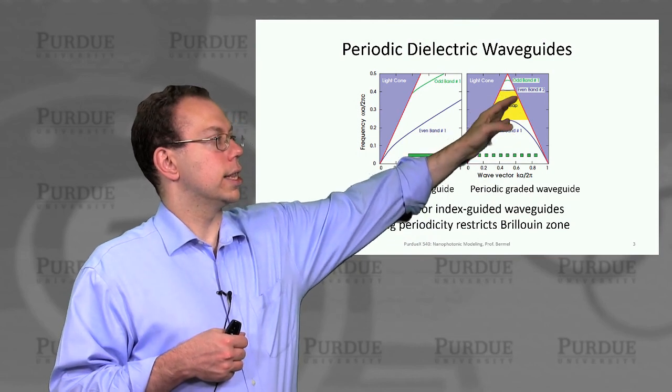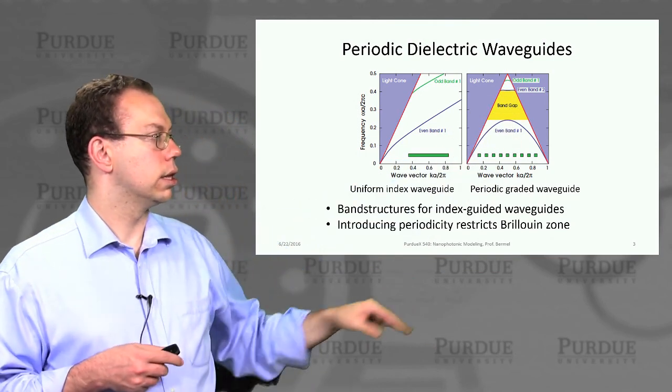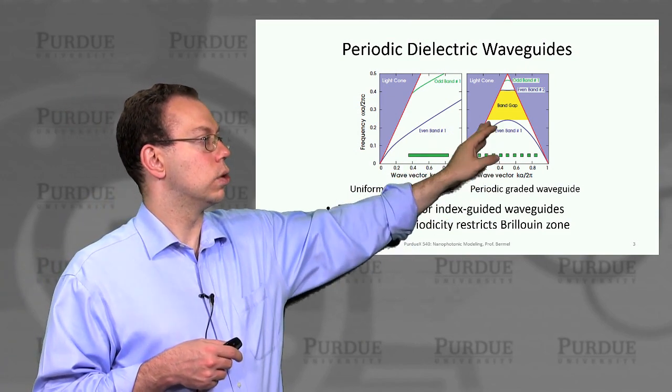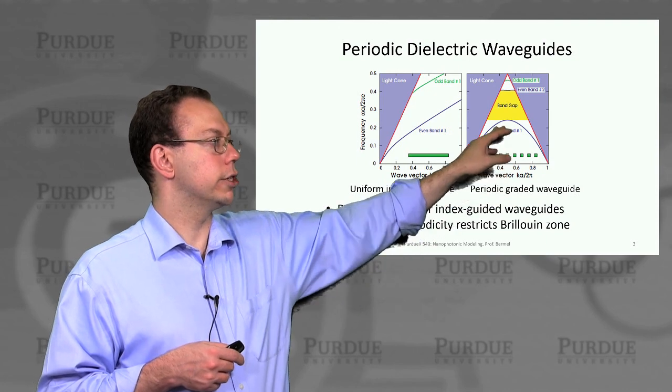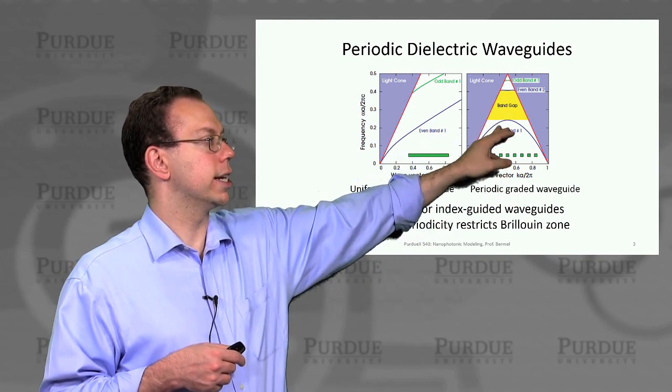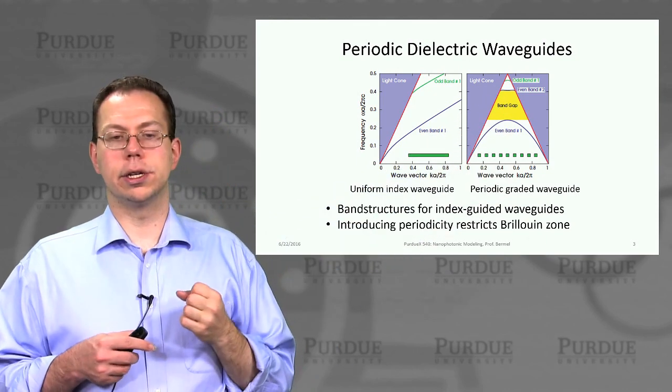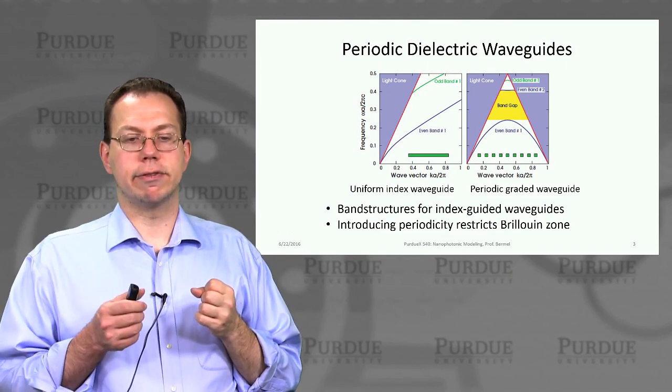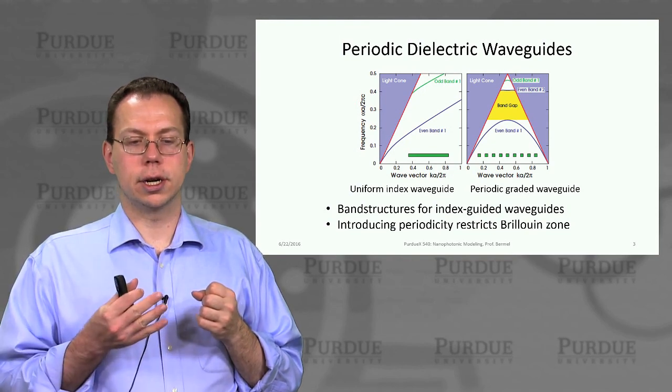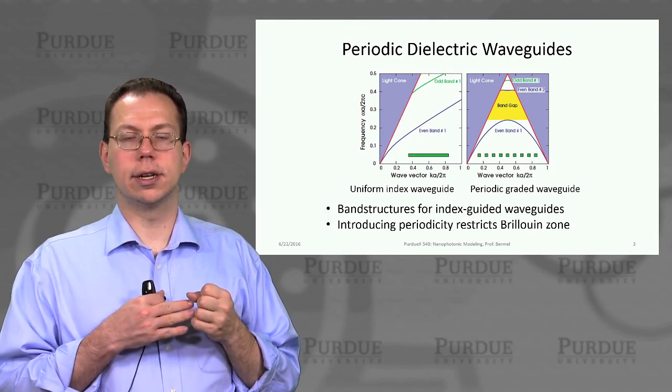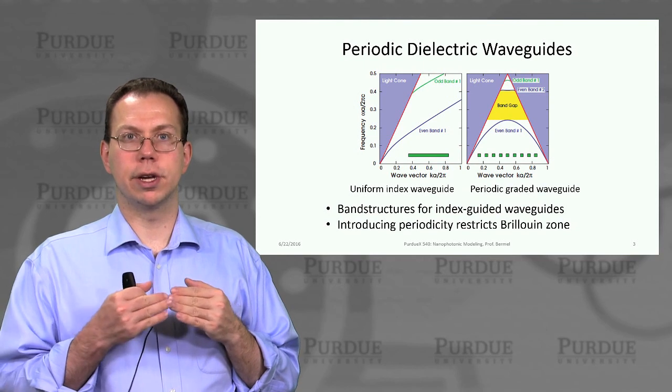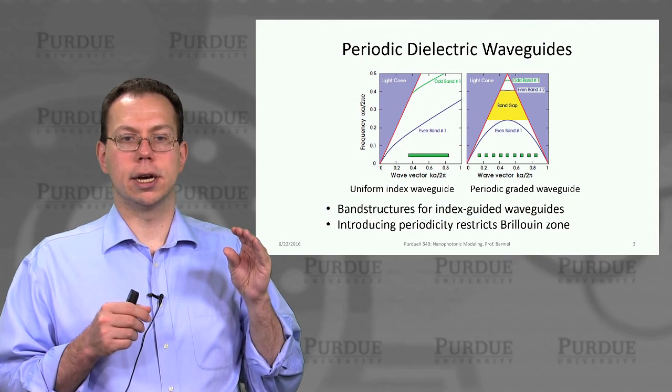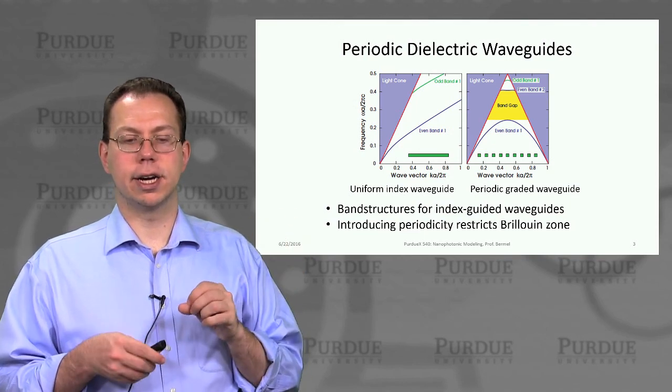And so then that gives rise to a dispersion that kind of looks like this. And so you can see that this is actually happening whether it's a very weak contrast or a very strong contrast. However, when you have a strong contrast, then you also get a large band gap between two even bands, and then you push the odd band out further. And so the net effect is that basically the larger the index contrast, then the better confinement you can have, as long as you're below the light line, both in the index guided directions and the photonic crystal directions.